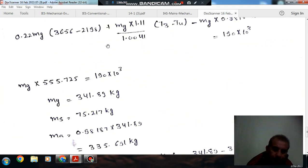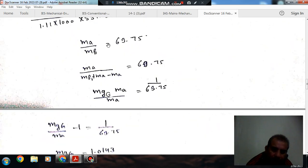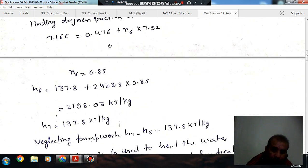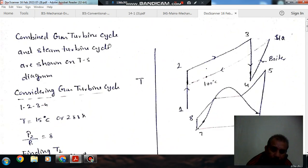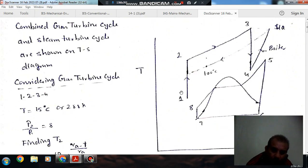So here first we draw the combined gas turbine cycle and steam turbine cycle shown on T-s diagram. Combined gas turbine cycle 1-2-3-4 is gas turbine cycle. 1-2 is compressor work. 2-3 is heat addition. 3-4 is turbine work.